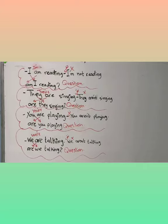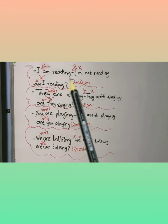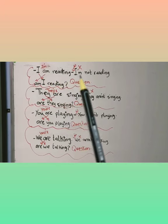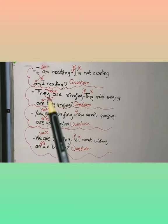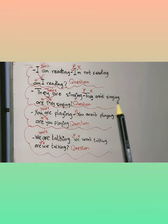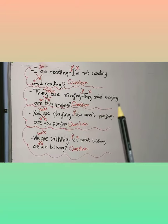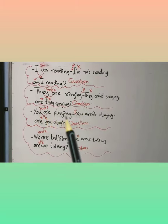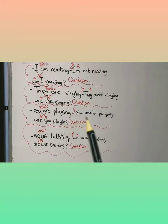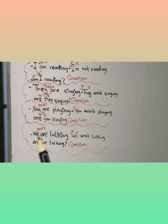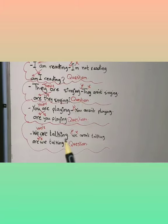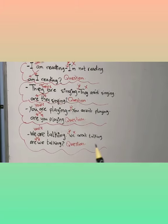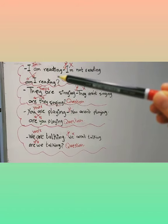I am reading — يعني أنا أقرأ. For the negative we add 'not': I am not reading. They are singing / They aren't singing — that's the negative. You are playing / You aren't playing. We are talking / We aren't talking.